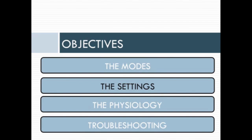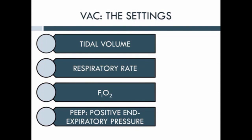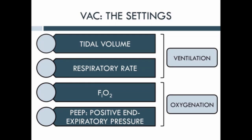Now that we've reviewed the modes, let's talk about the settings you would provide if a respiratory therapist asked you for ventilator settings. For volume assist control, you set the tidal volume, the respiratory rate, the FiO2, and the PEEP — positive end expiratory pressure. Tidal volume and respiratory rate determine minute ventilation, while FiO2 and PEEP determine oxygenation. Whenever you think about a patient, you should decide: does the patient have an oxygenation problem or a ventilation problem? Then change the ventilator settings to fix that specific problem.